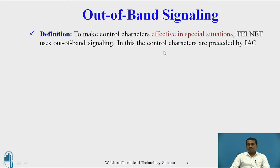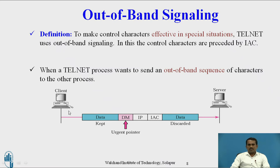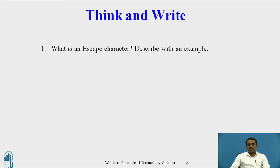Out-of-band signaling: to make control characters like EC, EL, IAC, and IP effective in special situations, Telnet uses out-of-band signaling. The control characters are preceded by IAC (Interpret As Control). When a Telnet process wants to send an out-of-band sequence, the client sends DM (Data Mark) as an urgent pointer, holding the address of the receiver side. IP and IAC can then be discarded after processing.